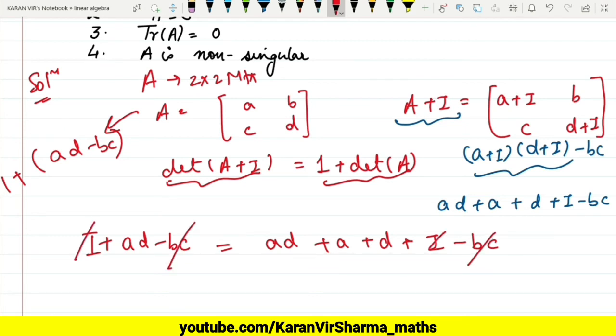This gets canceled out, i gets canceled out, and similarly ad gets canceled out. So what we are getting from here is that a + d = 0. Now what was a + d? You can check it out in the matrix A.